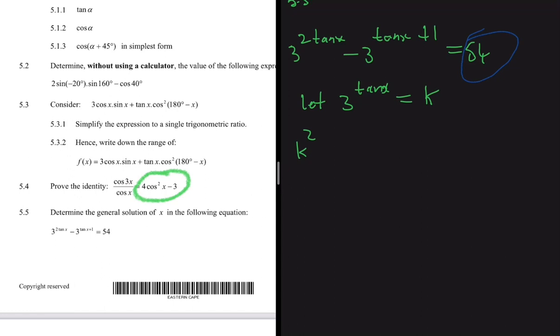In place of -3^(tanX+1), let me break that down for you. 3^(tanX+1) is the same as 3^(tanX) × 3, so here we're gonna have -3K, and that equals 54. Now we can take 54 to the left-hand side: K² - 3K - 54 = 0.